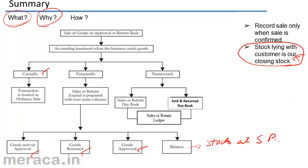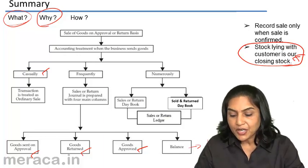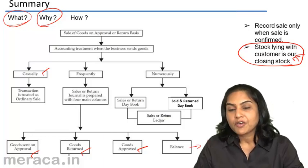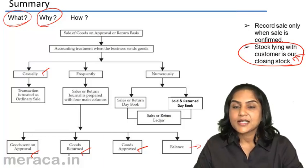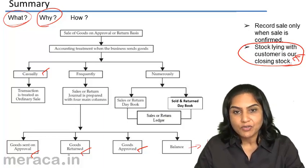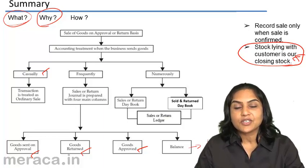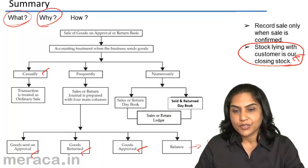In addition to this, a sale or return ledger may be kept when goods are sold frequently. This consists of two kinds of accounts: the customer's accounts and the total sale or return account.